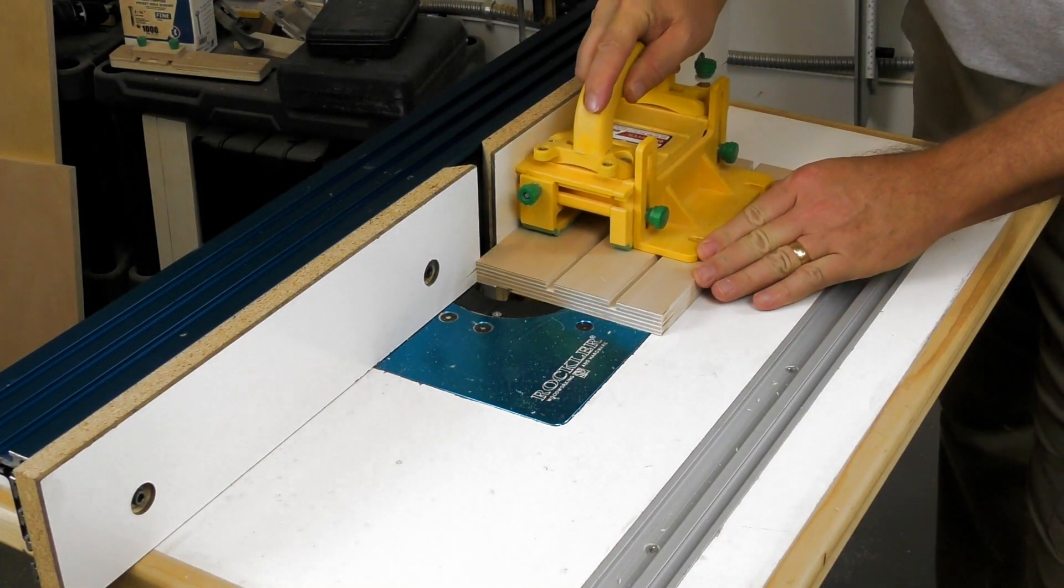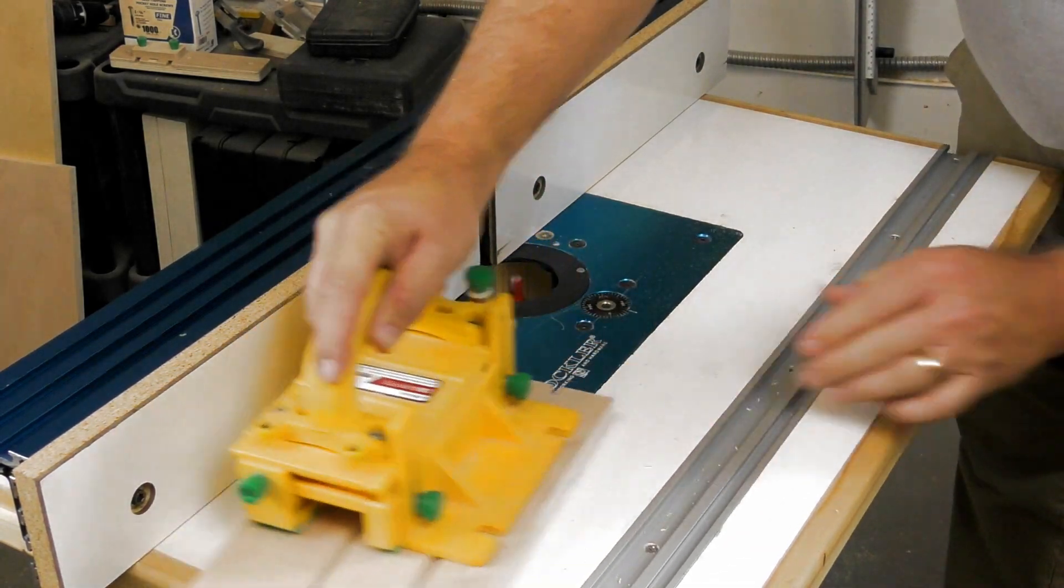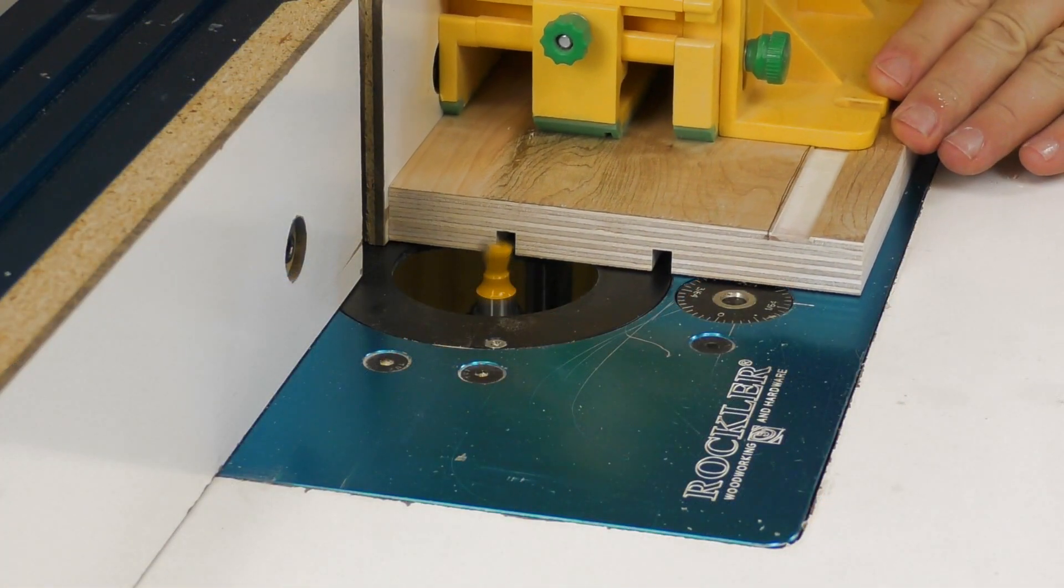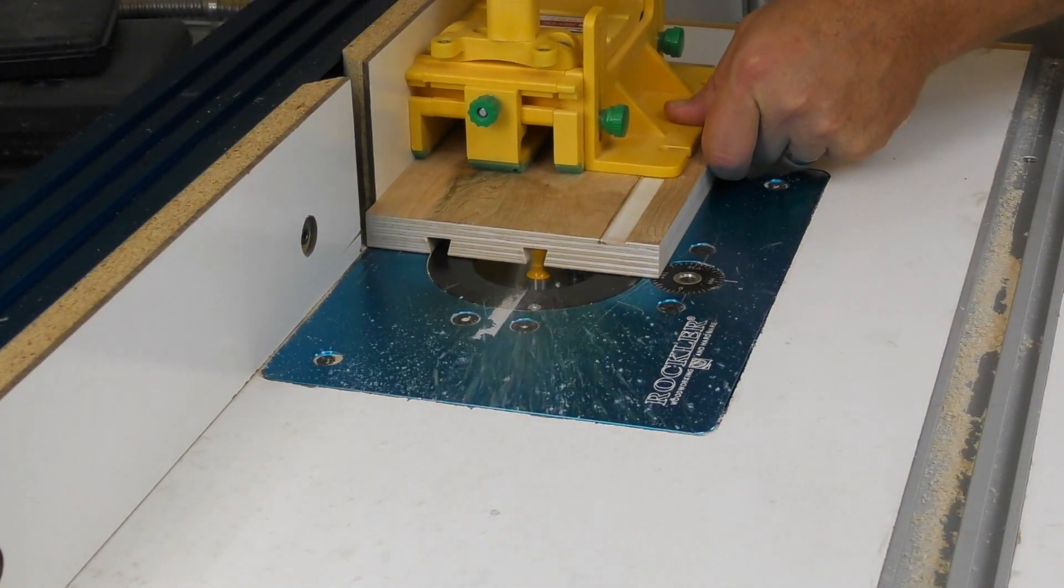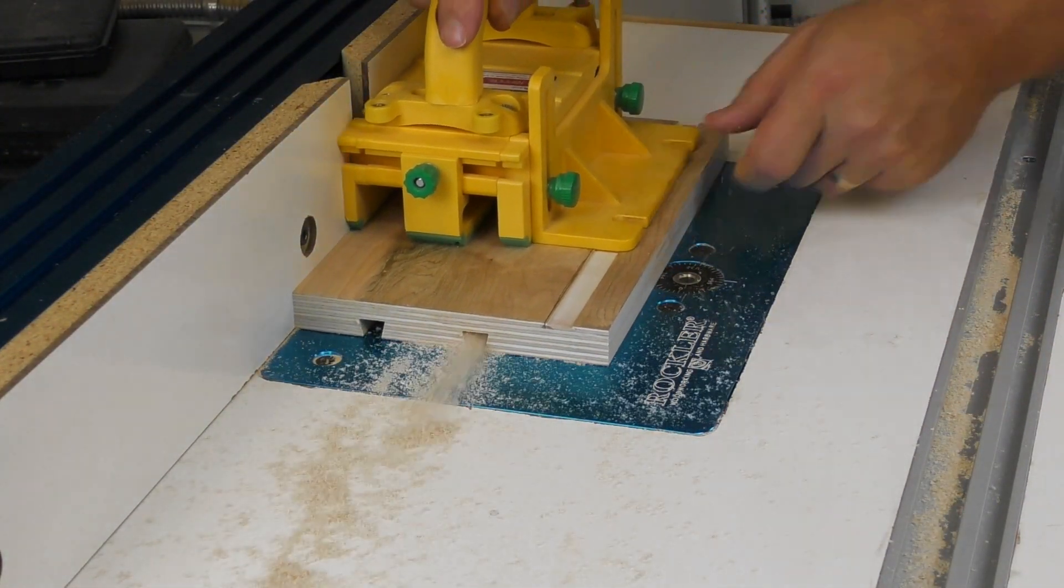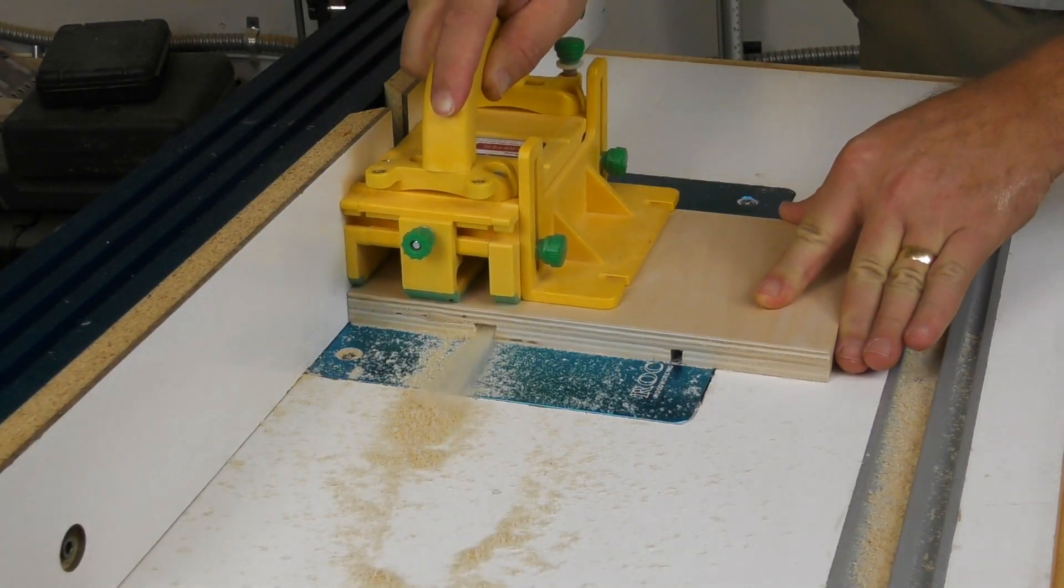Moving to the router table, the vertical face gets a shallow groove where it attaches to the slide. The router table is set up with the dovetail bit, and both of the grooves in the vertical face get milled, and then just one of the grooves in the base gets milled.